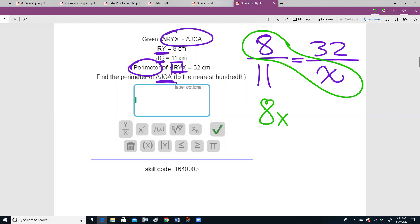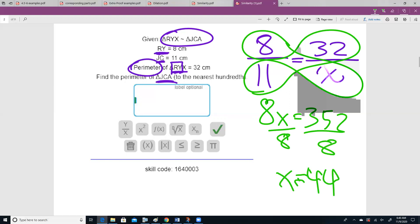And then we're going to solve for our other perimeter. 352 divided by 8, x equals 41 centimeters.